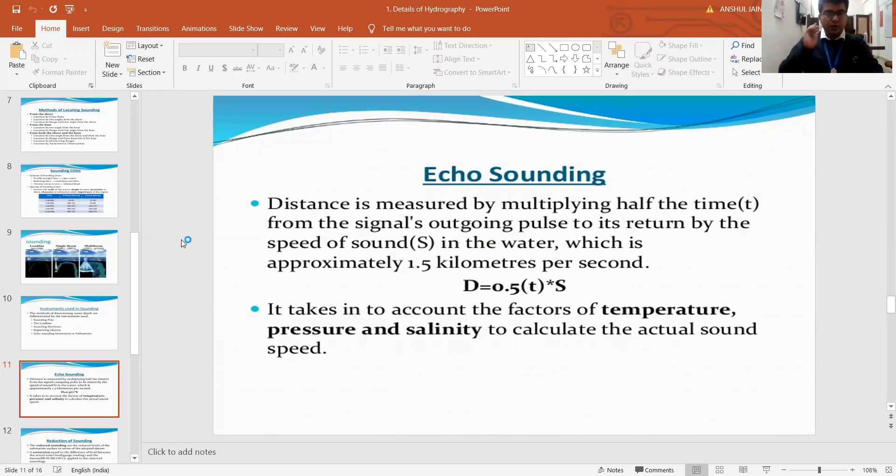We will multiply it with the speed of the particular light which we have emitted in the water. In approximation, you can take the speed as nearly 1500 meters per second or 1.5 kilometers per second is the average speed. The different factors which are considered for calculating this sound speed are temperature conditions, pressure, and salinity.